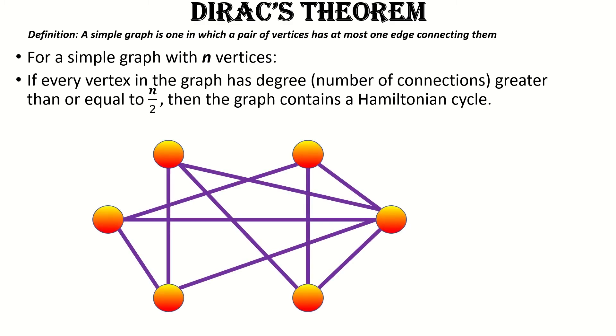Here's an example of a graph that, by Dirac's theorem, contains a Hamiltonian cycle. Notice that there are six vertices, and every vertex has degree at least 6 over 2, or 3. Sure enough, there is a Hamiltonian cycle in this graph.